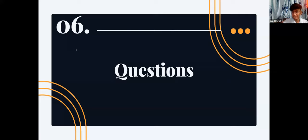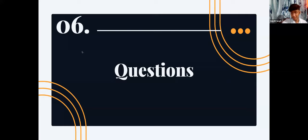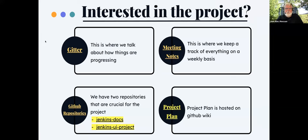When you are aiming for GSOC, I would say contribute as much as you can. Ask detailed questions and put the research you did into those questions. Always know that anything can go wrong, but don't get depressed when things go wrong. If you have contributed, you have the knowledge, you can do it again. In closing, if you're interested in the project, you can come to the Gitter channel, find the meeting notes, and the GitHub repositories for Jenkins Docs and Jenkins UI. The project plan can be found on the GitHub wiki of Jenkins Docs.